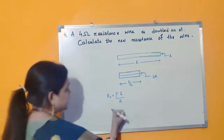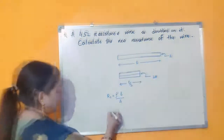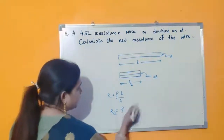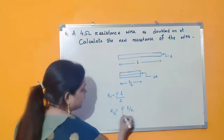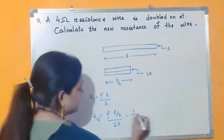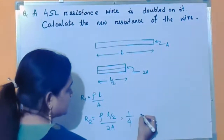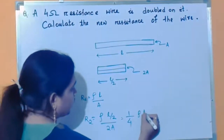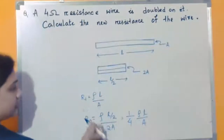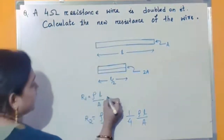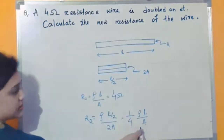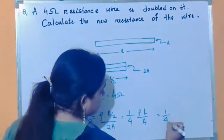After doubling on itself, what will be the final resistance of the wire? R2 is the resistance of the second wire. R2 equals rho times (L/2) divided by 2A. Taking common factors, this 2 and this 2 give 1/4, so R2 = (1/4) times rho L by A. This rho L by A is nothing but the resistance of the given wire, whose value is given in the question as 4 ohm. So putting 4 ohm into the equation, we get (1/4) times 4 ohm.